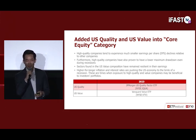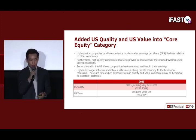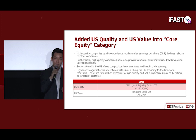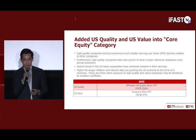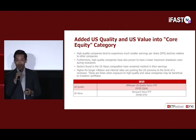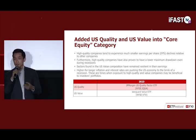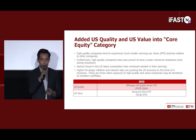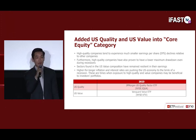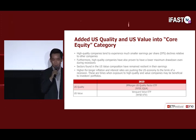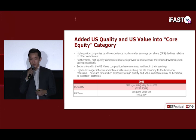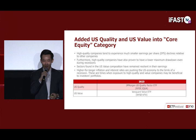For US quality and US value, we added two new subcategories under core equity. High-quality companies tend to experience smaller earnings declines relative to others, especially during tough times or a recession, and have a proven track record of lower maximum drawdowns. Sectors in the US value composition have remained resilient throughout the past three recessions compared to growth stocks. With higher-for-longer inflation and interest rates pushing the US economy toward recession, exposure to quality and value companies may benefit investors. We recommend the JPMorgan US Quality Factor ETF (JQUA) and the Vanguard Value ETF (VTV).